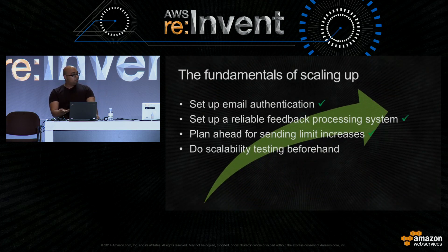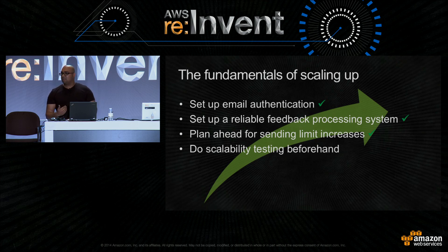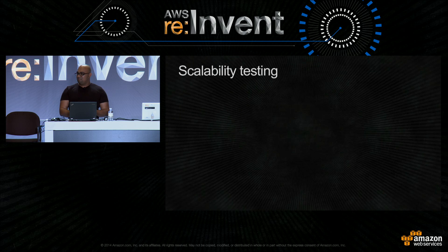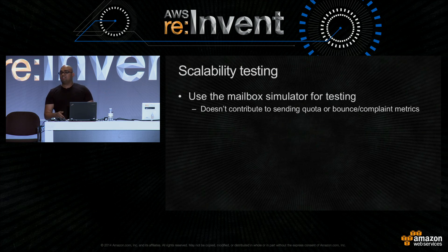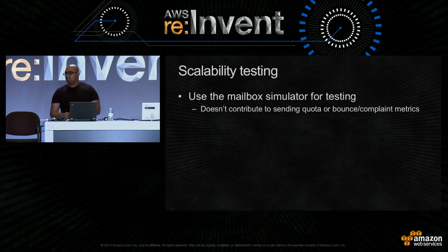Let's say you've gone ahead and monitored your sending, realized you needed a greater limit, put in that request, and now you have a higher limit. Now it's a good idea to make sure that your email application is actually able to scale up and give us those requests at that increased rate. We offer a feature we call the mailbox simulator — a series of email addresses you can send email to freely to test your application without using your sending quota or contributing to your bounce and complaint metrics. Some simulate a successful delivery, some simulate a bounce or complaint. It's a great way to load test your application as well.